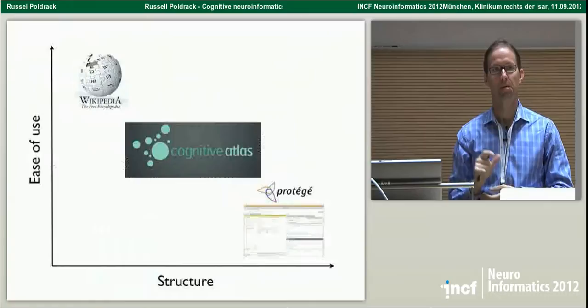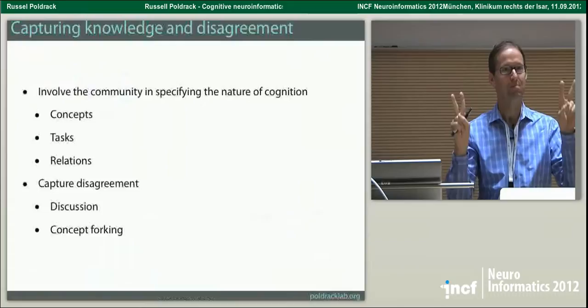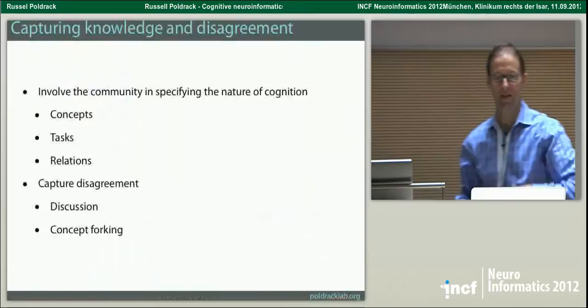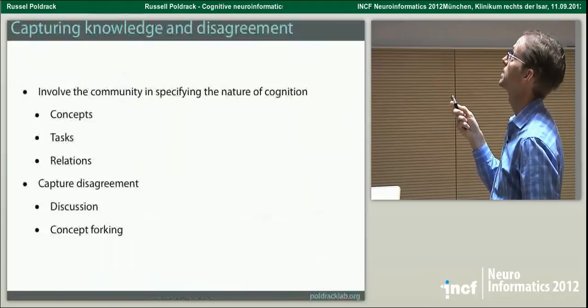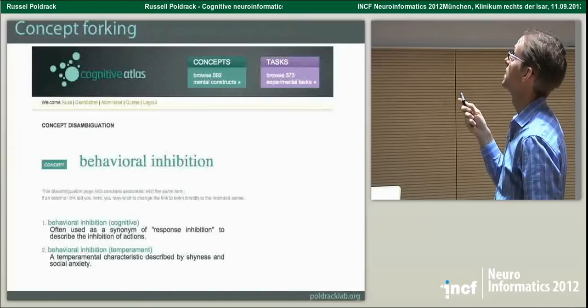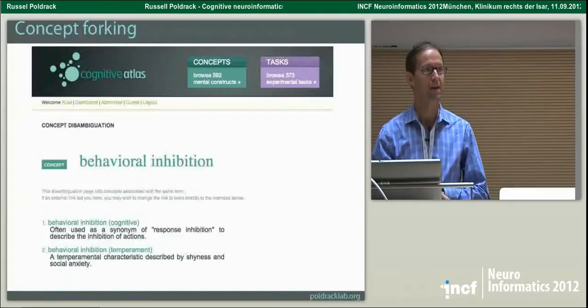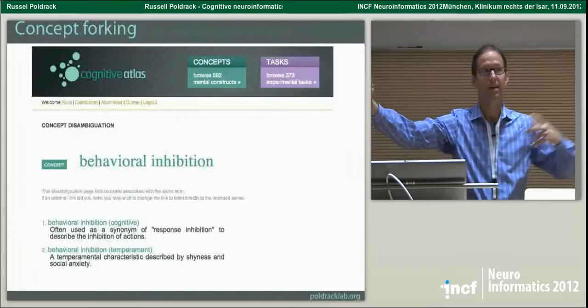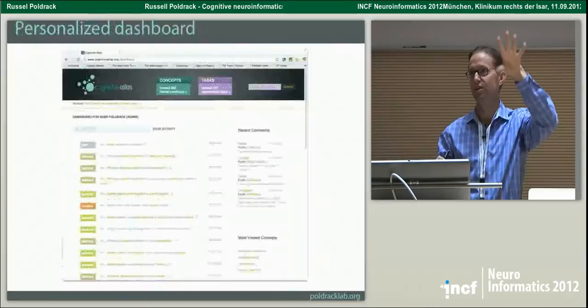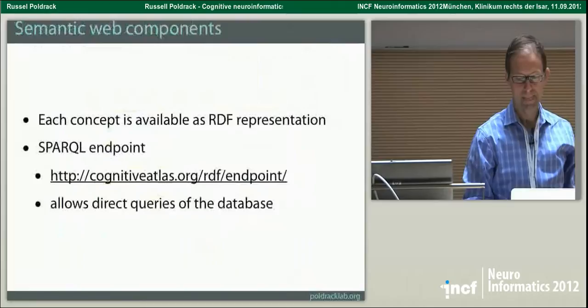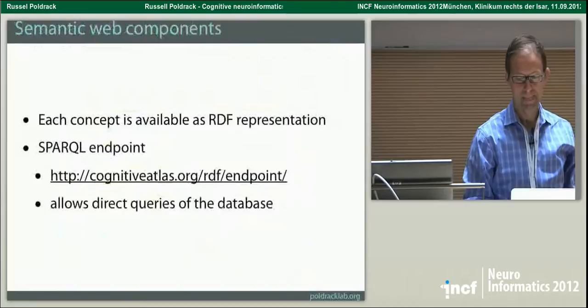We came up with a novel relationship that we call the 'measured by' relationship. Any particular cognitive concept — say, response suppression — has ontological relationships with other mental concepts, so response suppression is part of response inhibition, but in the end it's defined by its measurement, in this case measured by something we call SSRT. There could be multiple different things measuring it. If we want to link real data up to these psychological concepts, we have to do that by defining the measurement relationships that link those concepts to real data.